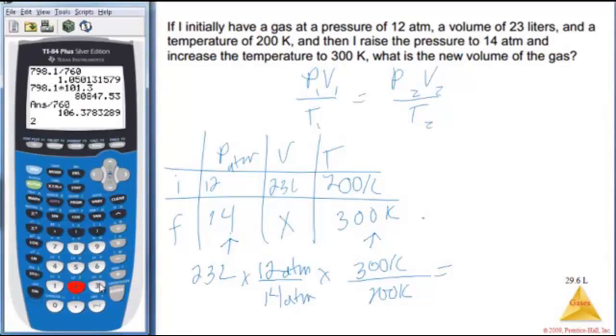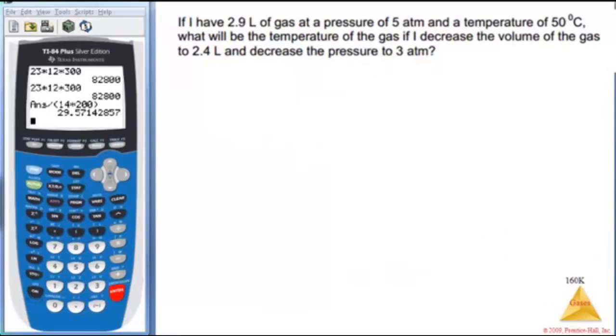Now I punch that. I get 23 times 12 times 300 equals divide by 14 times 200, close my parentheses. And I get 29. I want two sig figs, so it really should be 30 liters.